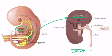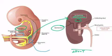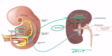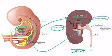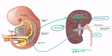The ureteric bud — shown here in pale pink — forms the collection system, which has maintained that pale pink color in this diagram. This includes everything from the collecting ducts, which you can see coming off that nephron, all the way down to the ureter, which of course includes the calyces and the renal pelvis.